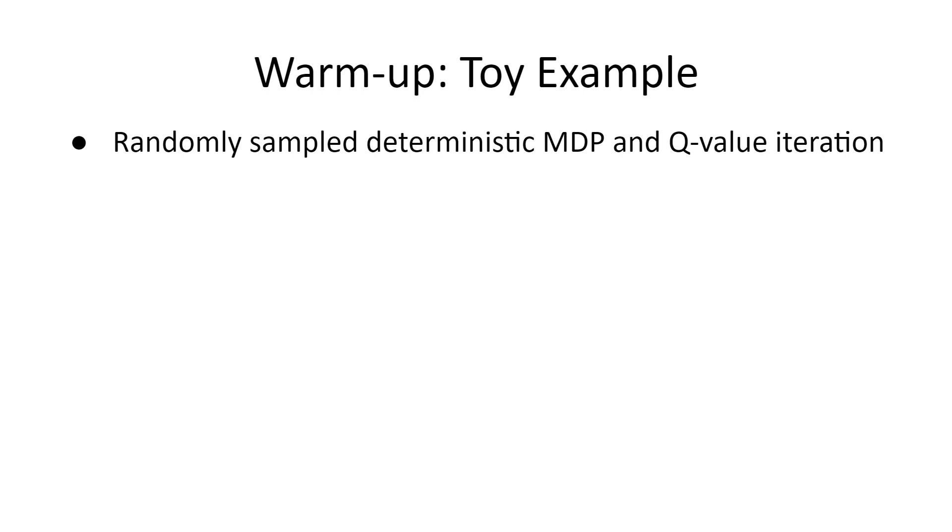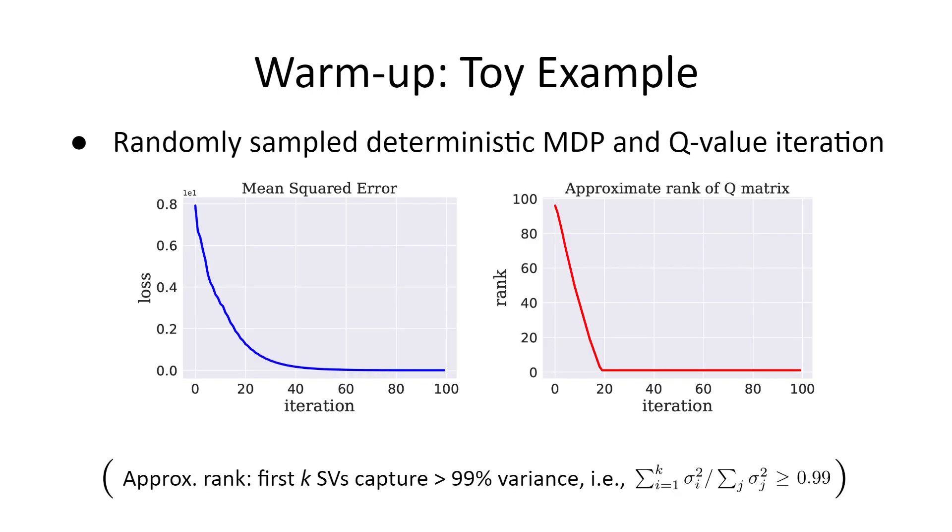To warm up, let's first consider a toy MDP with 1000 states and 100 actions. That is, the Q-matrix is of dimension 1000 by 100. To obtain the optimal Q-value, we perform the standard Q-value iteration. Let us now visualize how the learning process evolves. On the left, we plot the mean squared error at each iteration. More interestingly, on the right, we show the approximate rank of the Q-matrix during the iterations. Here, the approximate rank is defined as the first k singular values that capture more than 99% variance of all singular values. We observe that the converged Q-star is of low rank, and throughout the learning process, the approximate rank drops very fast. Clearly, there is evidence supporting the intrinsic low dimensionality of this toy example.